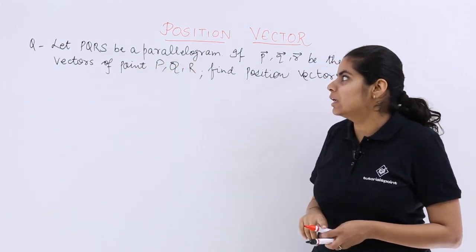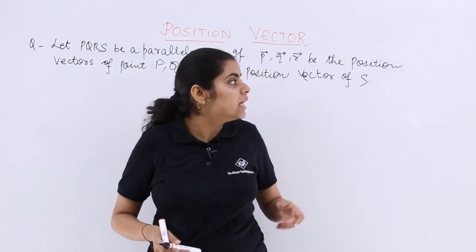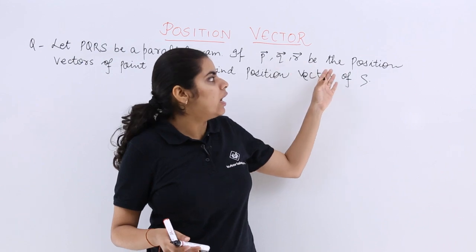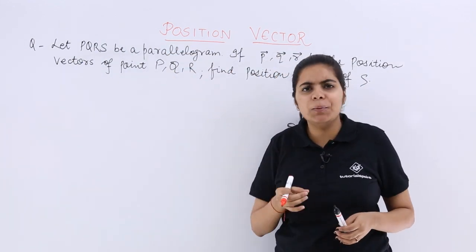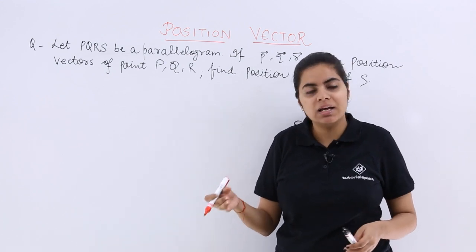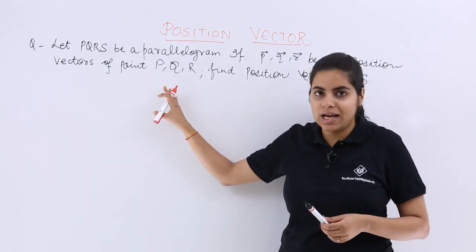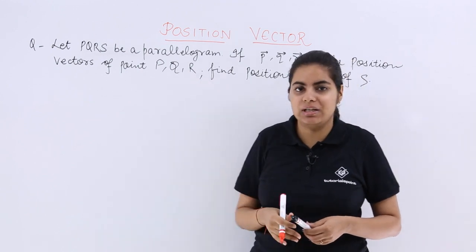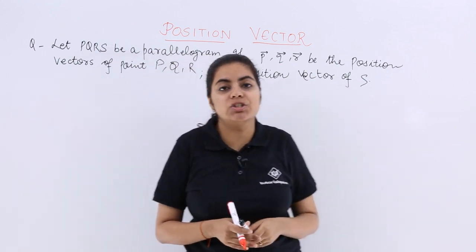Let PQRS be a parallelogram. If p, q, r are the position vectors of points P, Q, R respectively, we have to find the position vector of S.